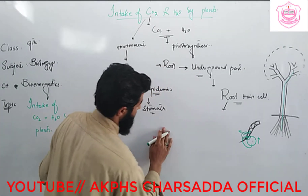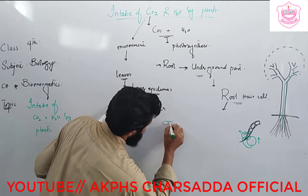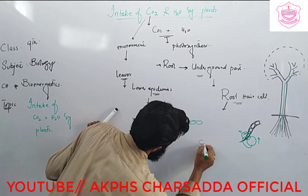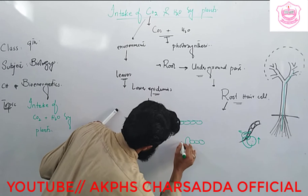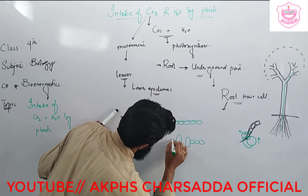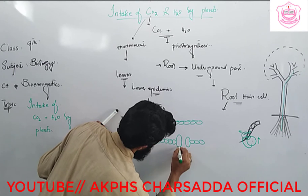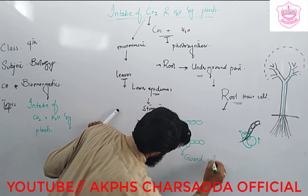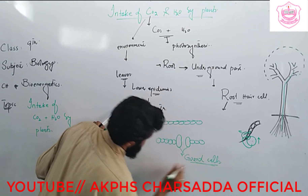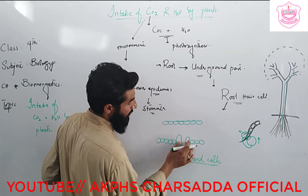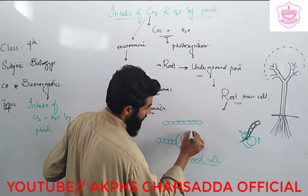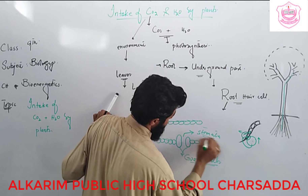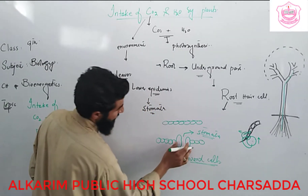When water reaches the leaves, guard cells are present there. The leaves have an upper epidermis and a lower epidermis — 'epi' means upper, 'dermis' means layer. The two cells that make the structure of the stomata are called guard cells. When the guard cells absorb water, they swell up and a pore space is produced between them — that pore is known as the stomata.